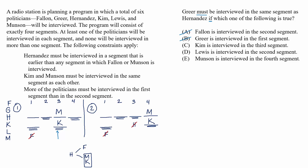D, Lewis is interviewed in the second segment. Let's test this choice out. In scenario two, if Lewis is in segment two, that would place Fallon alone in segment three. So Greer and Hernandez would be the two that have to be interviewed in segment one.